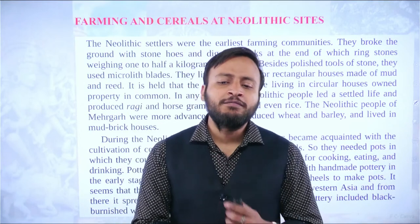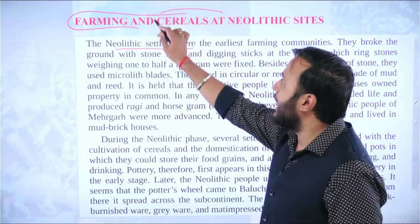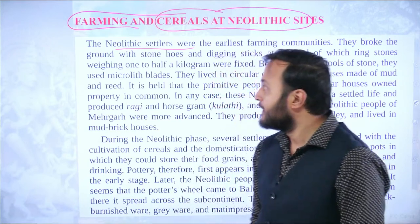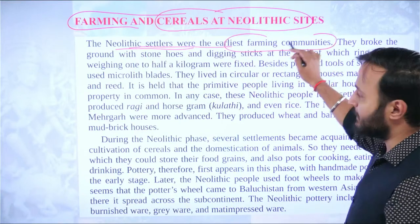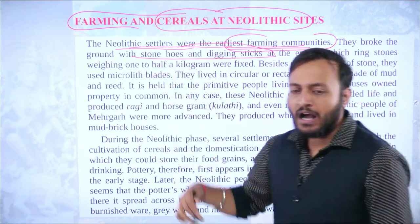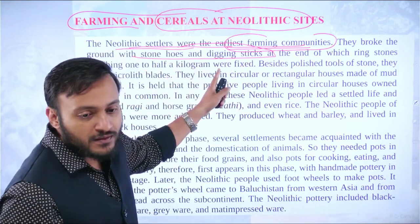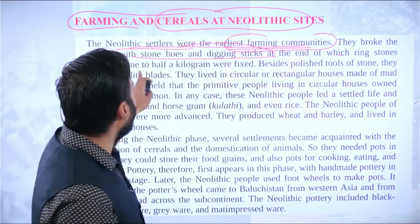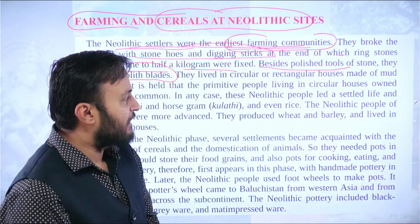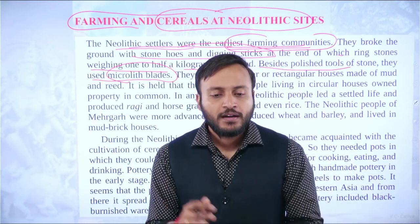Neolithic settlers had great knowledge about farming, particularly cereal farming. They were the earliest farming communities — they broke the ground with a stone hoe and digging sticks. The ring stones weighing half a kilogram to six kilograms were used to fix the digging sticks. Beside polished stone tools, they used microlithic blades. They utilized different stone tool technologies for cultivation.